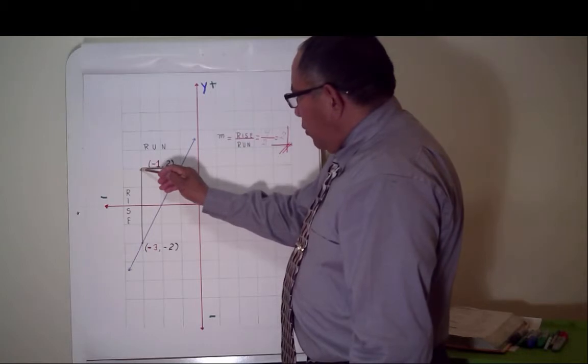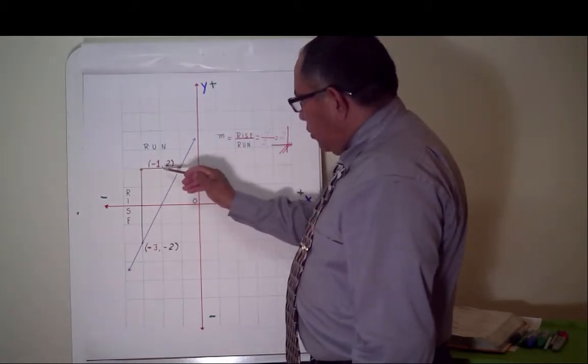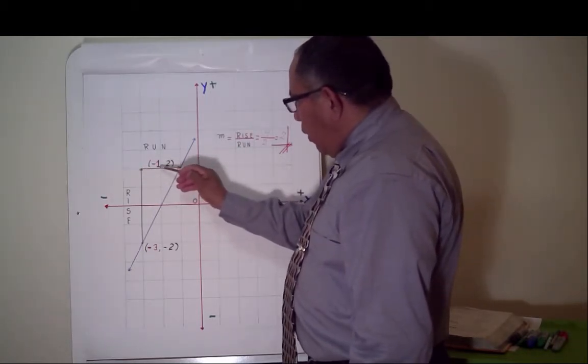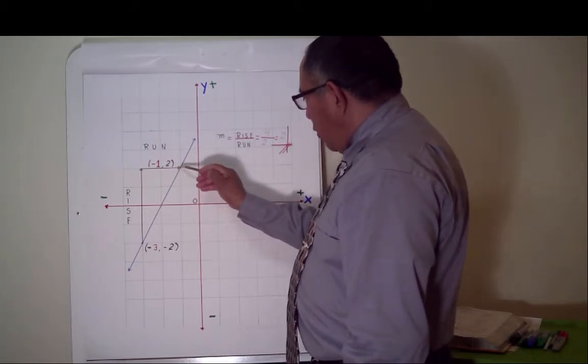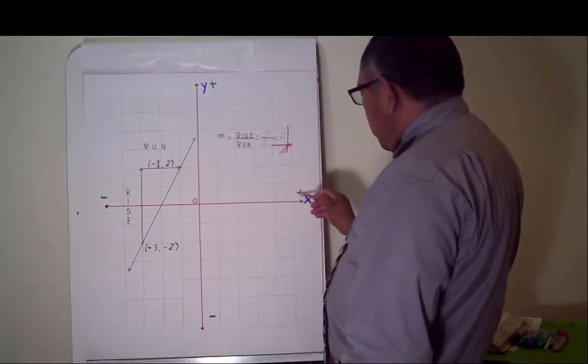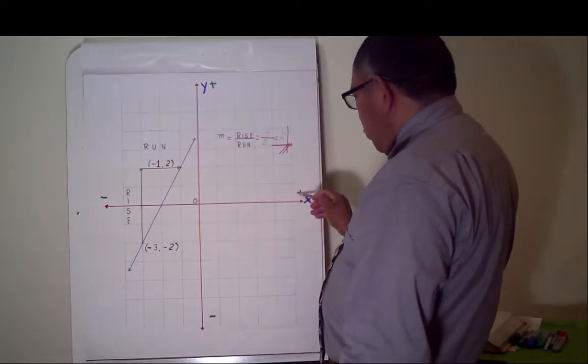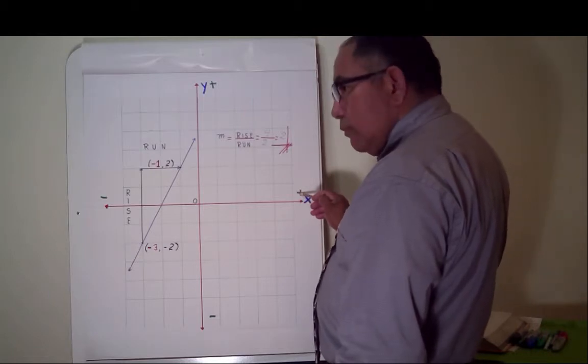From this point, to reach this point, we have to count. One, two. We are going to the right. Then, we have to do positive.